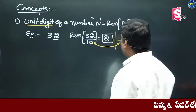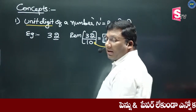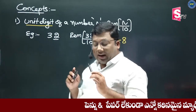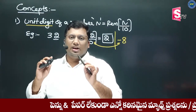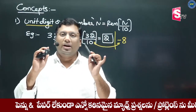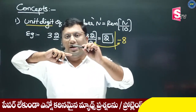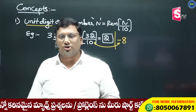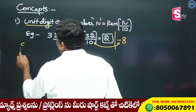Unit digit of a number: write the unit digit. You can divide by 10. You can add the negative value — add 10. Reminders are positive. I will explain that rule: you can write that line.